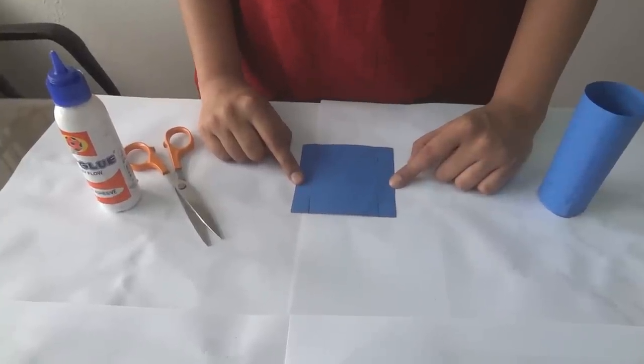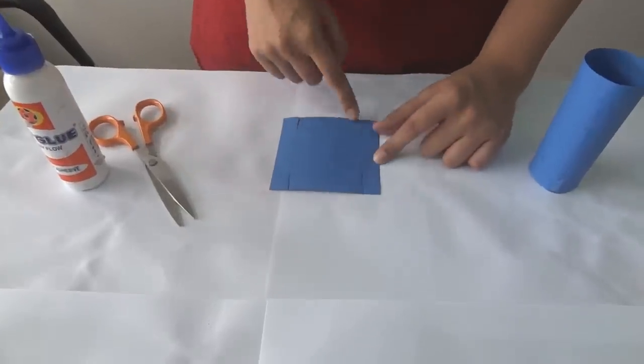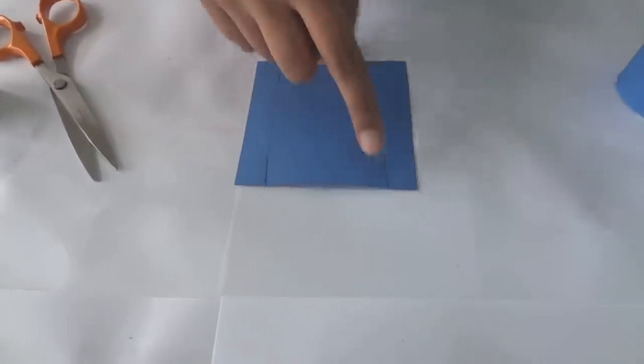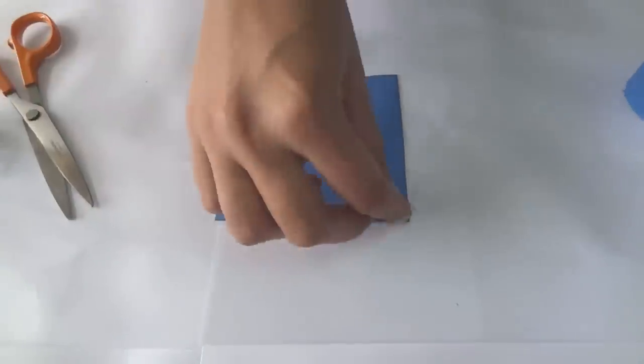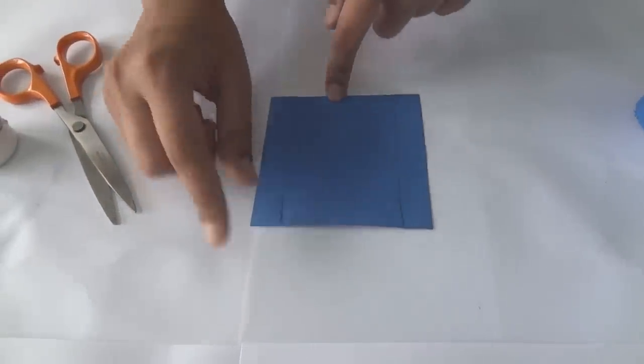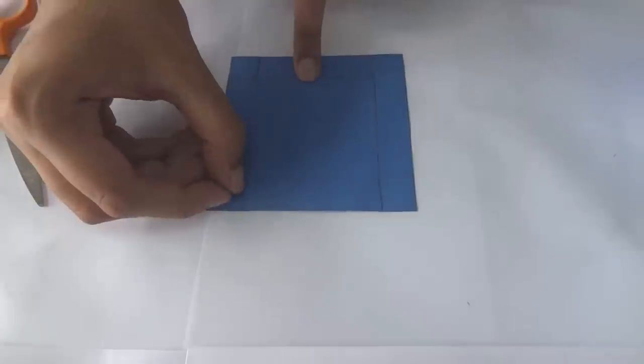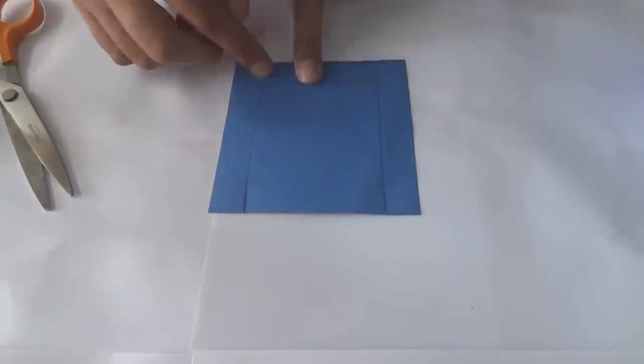To make the base of the pot we need a square piece like this. Make markings with the pencil, just about a centimeter border on all four sides.